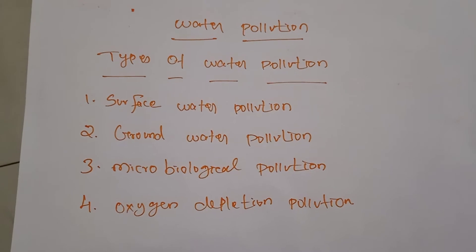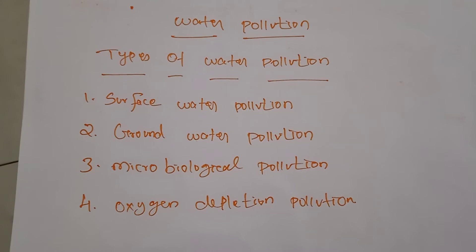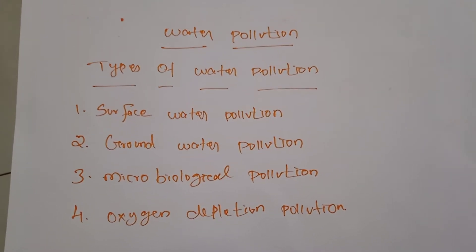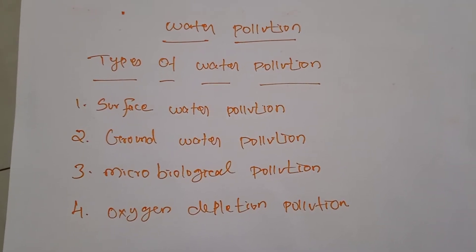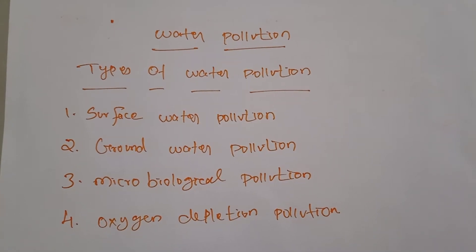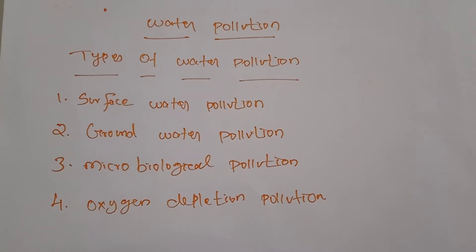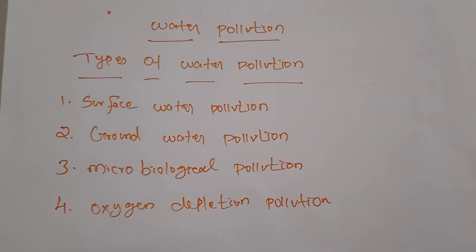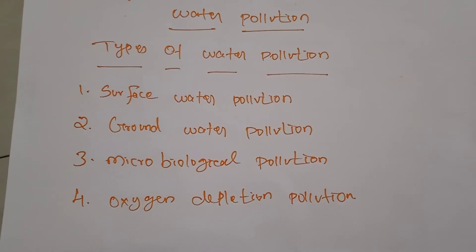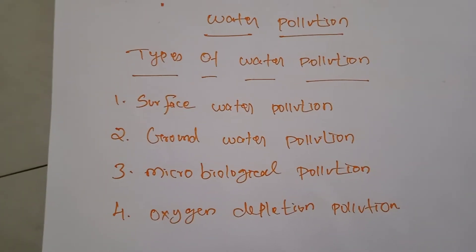Surface water pollution includes natural water found on the earth's surface, like rivers, lakes, lagoons, and oceans. Hazardous substances coming into contact with surface water, dissolving or mixing physically with the water, can be called surface water pollution. Wherever water exists on the surface of the earth and is polluted, it is called surface water pollution.